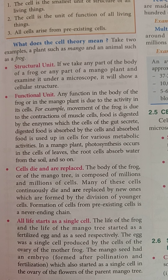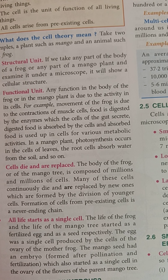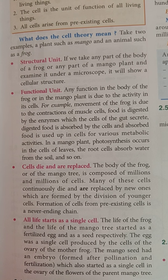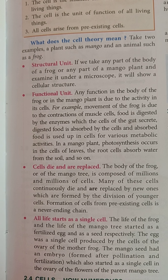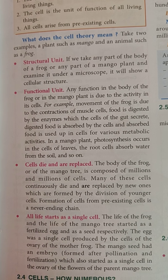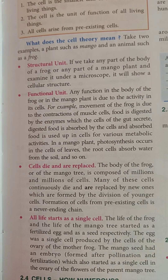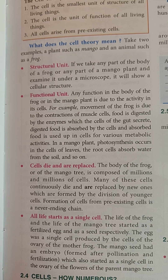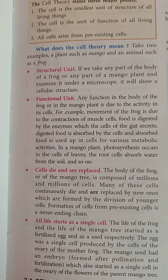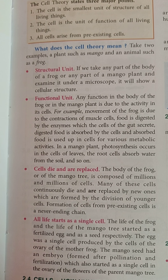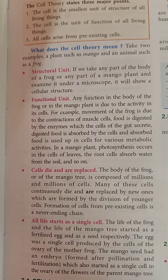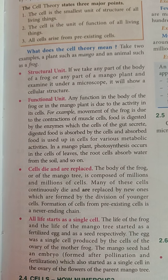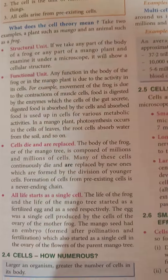Cells die and are replaced. In whatever state we are now, we do not have the cells we were born with — all the cells we were born with have died and have been replaced by new cells. Cells also have a lifetime; they die and are replaced by new young ones. This formation of cells from pre-existing cells — one cell divides into two cells, two cells divide into four cells — the cells previously there keep dying, new cells keep forming. This is a never-ending change.